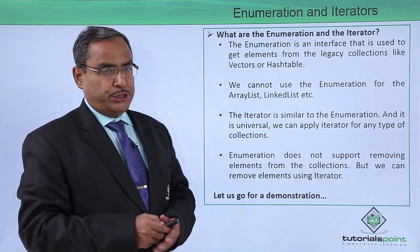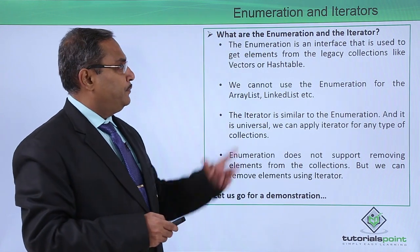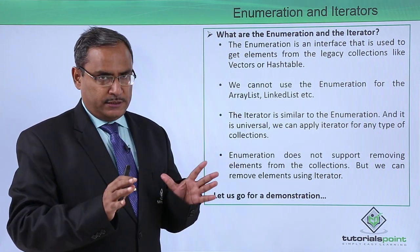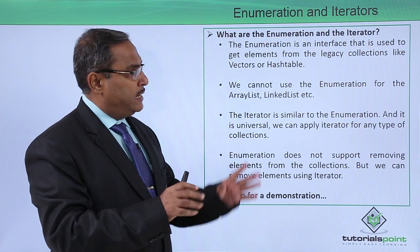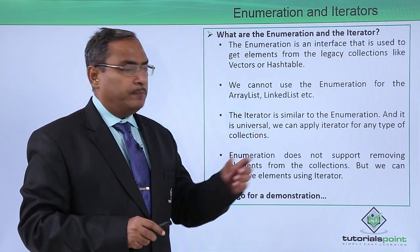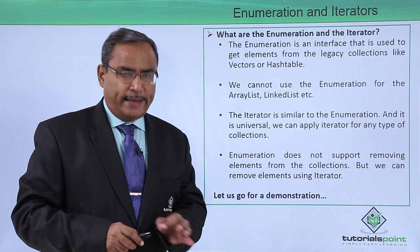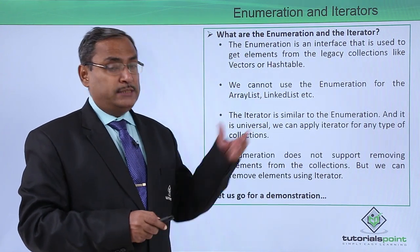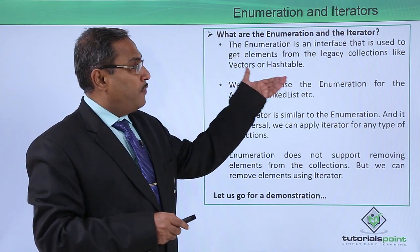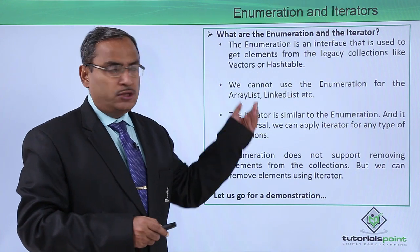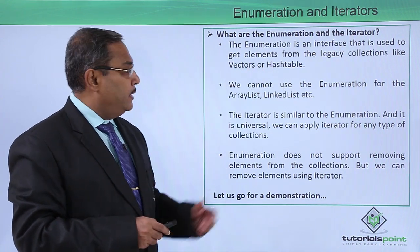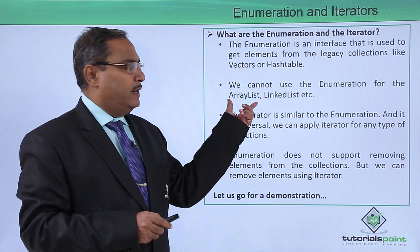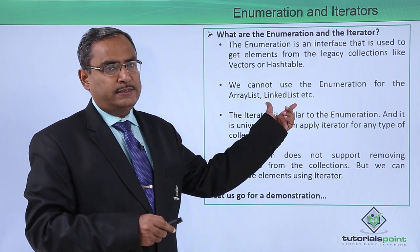What are enumeration and the iterator? Enumeration is an interface that is used to get elements from the legacy collections like vectors and hash tables. These are the legacy collections from where we can get elements through enumeration. We cannot use enumeration for array lists or linked lists, etc.